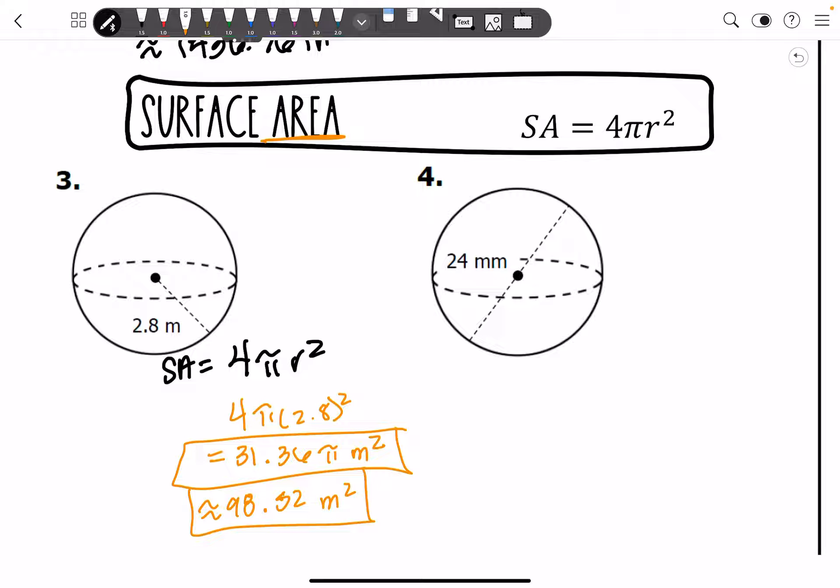I want you guys to go ahead and find number 4. You're going to get a nice, pretty number integer to act as your coefficient in your exact answer. And your approximate answer will be 1809.56 millimeters squared.